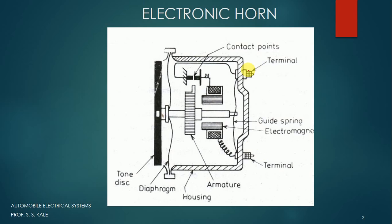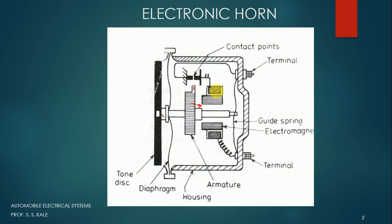When we supply electricity by pressing the horn button, the electricity is supplied to the circuit. If the contact breaker point is closed — meaning they are touching each other — electricity will move to the field coil or electromagnetic coil. The electromagnet will get activated and will attract the armature towards the right side. The armature moves towards the right side and after moving a certain distance, the stopper comes in contact and the contact will get broken. Once the contact breaks, the electricity supplied to the field coil also gets broken. As it breaks, the electromagnetic field collapses and because of the guide spring, the armature moves back towards the left side.